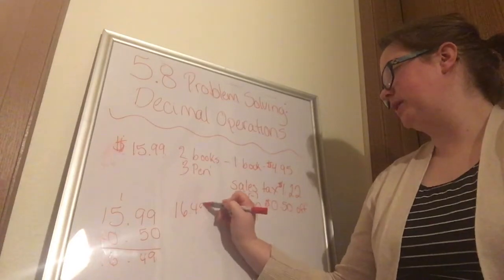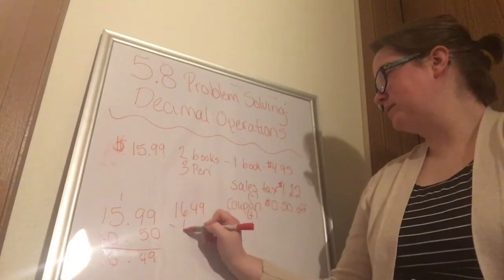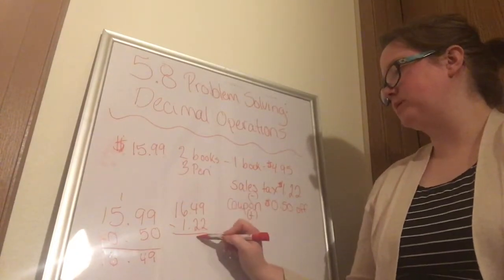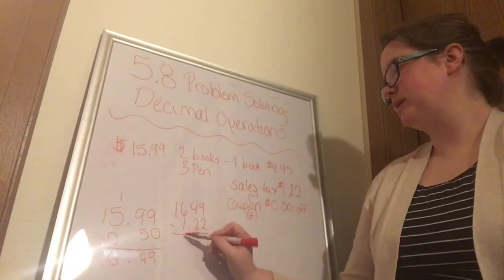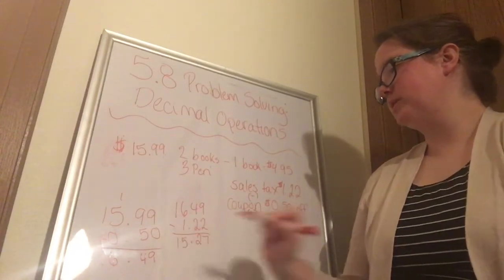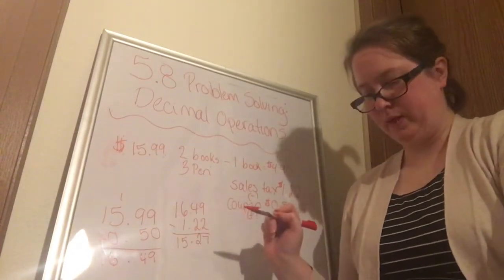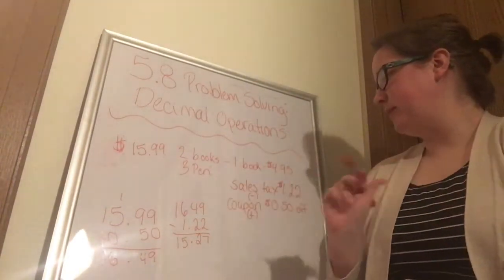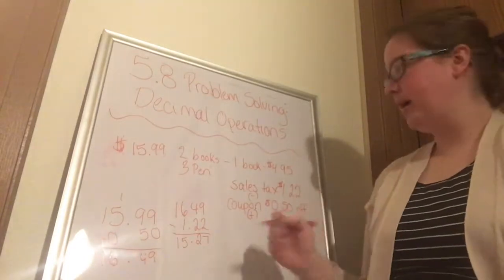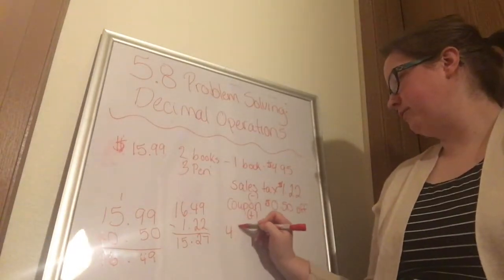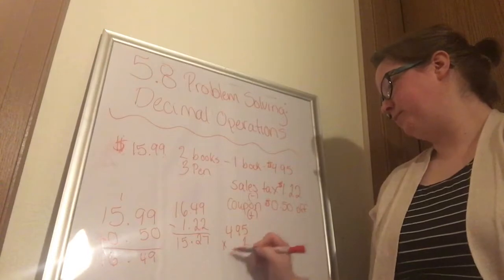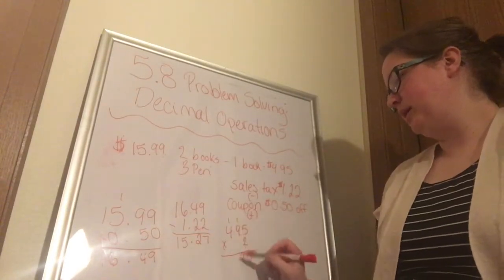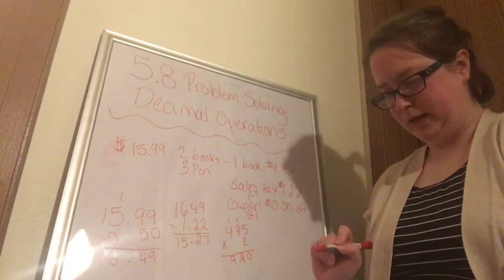So we have $16.49 minus $1.22, which gives us $15.27. Now we know there were two books at $4.95 each, so we figure out how much they cost together: $4.95 times 2 equals $9.90.